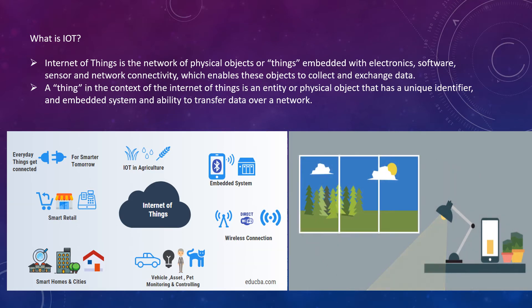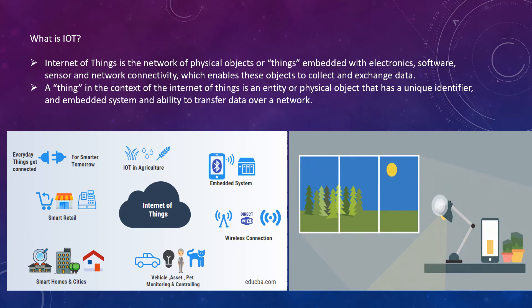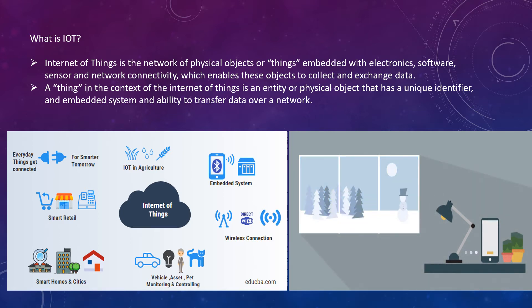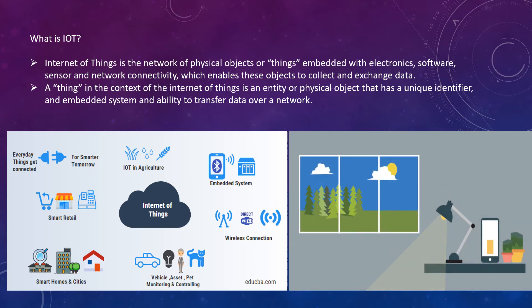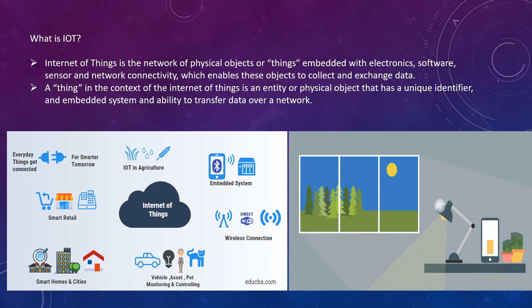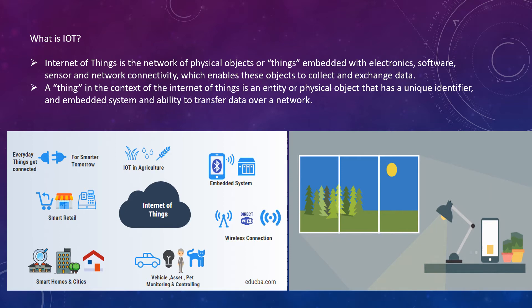A 'thing' in the context of Internet of Things is the entity or physical object that has a unique identifier, an embedded system, and the ability to transfer data over the network. Every device has a unique identifier — say for example, in school you have a roll number and no one will have the same roll number as you. Likewise, an IoT device is a physical object with a unique identifier embedded into an electronic device, which allows it to transfer data over the network.